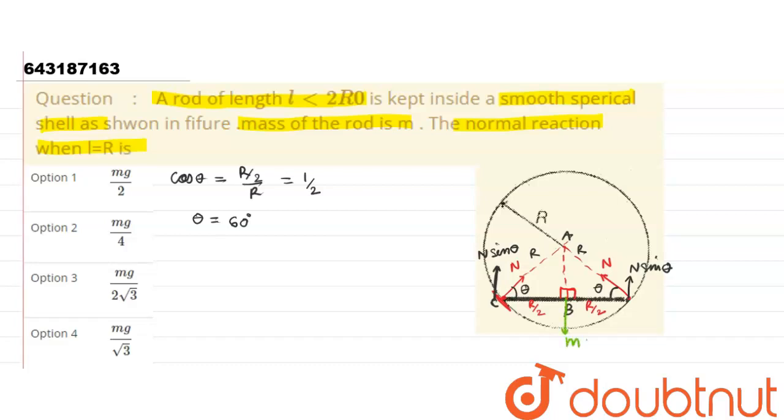Due to equilibrium, we can say that mg = 2N sin θ. From here we can say that N = mg/(2 sin θ). Since sin 60° = √3/2.